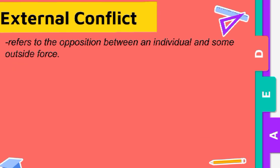Let's start with external conflict. It refers to the opposition between an individual and someone or some outside force. For example, person vs. person.